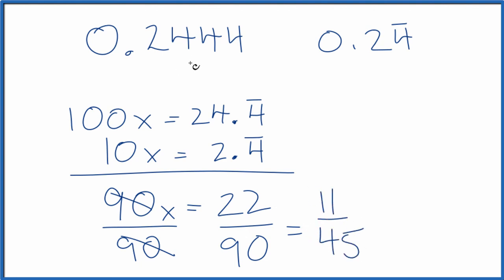We've simplified the fraction 0.24444, 0.24 repeating down to 11 45ths. And this technique works on any repeating decimal. There are other ways to do this. I find this to be the easiest. Essentially, we're just trying to get rid of that repeating decimal so we have whole numbers.